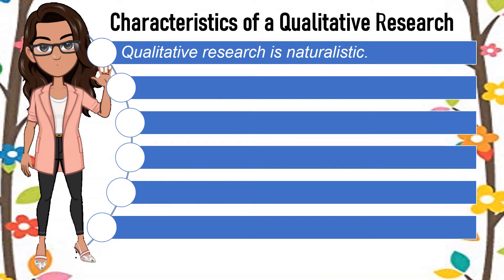First, qualitative research is naturalistic. A study to be conducted by the researcher should be based on real life situations. Likewise, the researcher should also unfold the study in a natural manner. That is, the findings are derived from the analysis of authentic data gathered from the participants. Such a concept makes qualitative research known for its non-controlling characteristic.